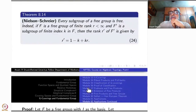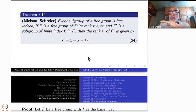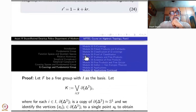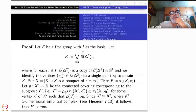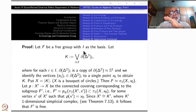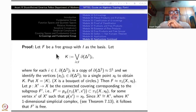We used the fact that a covering space inherits a simplicial structure from the base space. Starting with a free group F with basis I, we take as many copies of the boundary of the standard 2-simplex Δ₂ as there are elements in I. Since the boundary of Δ₂ is homeomorphic to S¹, each copy has fundamental group infinite cyclic.